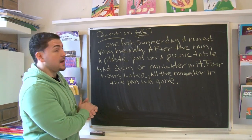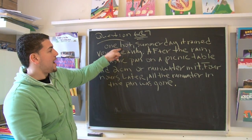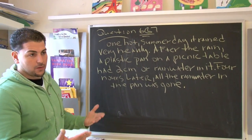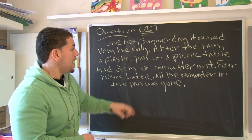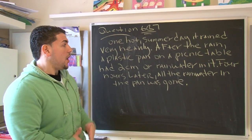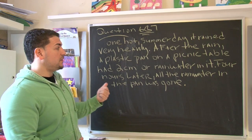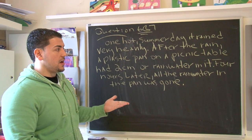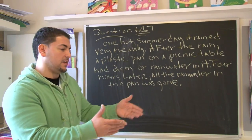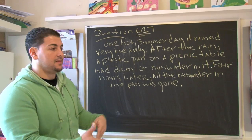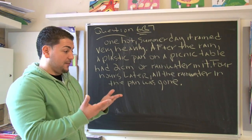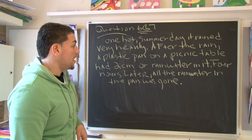We're talking about science here. It says one hot summer day it rained very heavily — which means it rained a lot. After the rain, a plastic pan on a picnic table had two centimeters of rainwater in it. Just think about it like you go on a picnic or in your backyard and you leave a dish or bowl outside, it rains a lot and the pan fills up with water about this high.